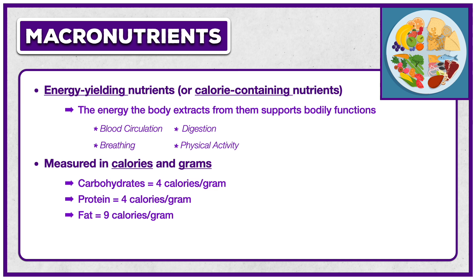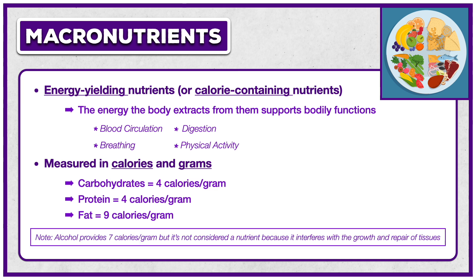The macronutrients are measured in calories to represent energy. However, they're also measured in grams for their weight. Carbohydrates and protein each provide 4 calories per gram, and fat provides 9 calories per gram. Alcohol is also energy-yielding and provides 7 calories per gram, but it's not considered a nutrient because it interferes with the growth and repair of tissues.